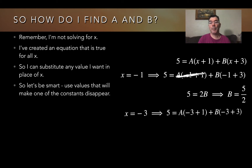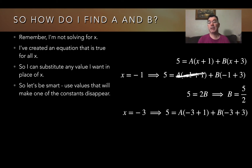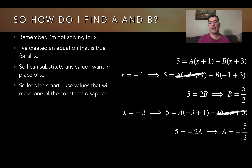Then I go back to the equation and replace x with negative 3. Now B is being multiplied by negative 3 plus 3, which is 0, so the B term goes away and I can solve for constant A. Constant A is going to equal negative 5 halves.